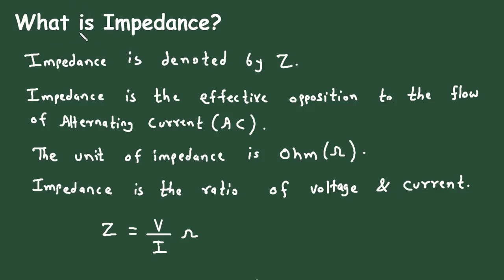In this video we will see what is impedance. Impedance is denoted by Z. Impedance is the effective opposition — it is like resistance to the flow of alternating current, that is AC. The unit of impedance is Ohm, same like resistance. Impedance is the ratio of voltage and current, but this is in AC. So Z is equal to V by I, that is voltage by current. The unit of impedance is Ohm, which is represented by the Omega symbol.